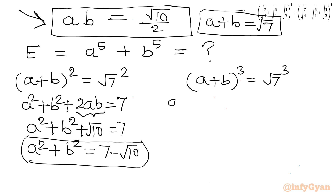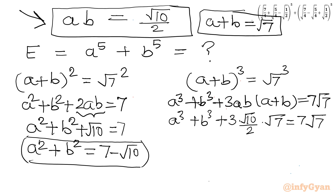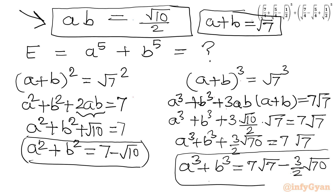Now for (A+B)³ = (√7)³ = 7√7. Applying the identity A³ + B³ + 3AB(A+B) = 7√7. Substituting AB = √10/2 and A+B = √7 gives A³ + B³ + 3(√10/2)(√7) = 7√7, so A³ + B³ + (3√70)/2 = 7√7. Therefore A³ + B³ = 7√7 − (3√70)/2.